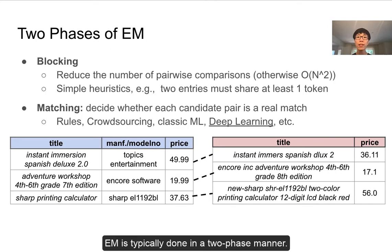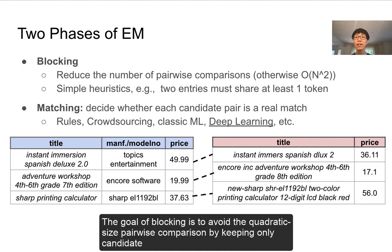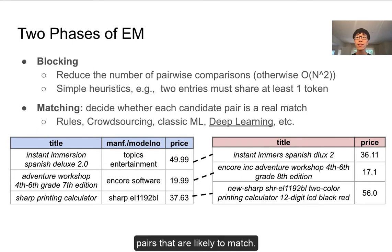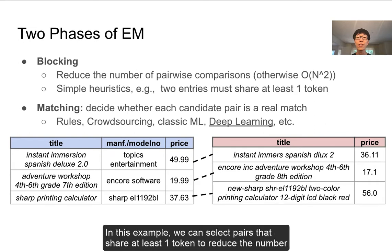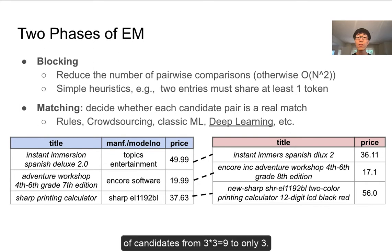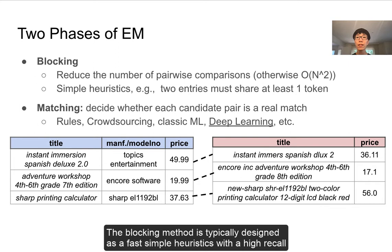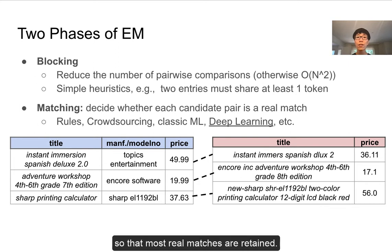EM is typically done in a two-phase manner. The first phase is the blocking phase. The goal of blocking is to avoid the quadratic size pairwise comparisons by keeping only candidate pairs that are likely to match. In this example, we can select pairs that share at least one token to reduce the number of candidates from 9 to only 3. The blocking method is typically designed as a fast simple heuristic with high recall so that most real matches are retained.